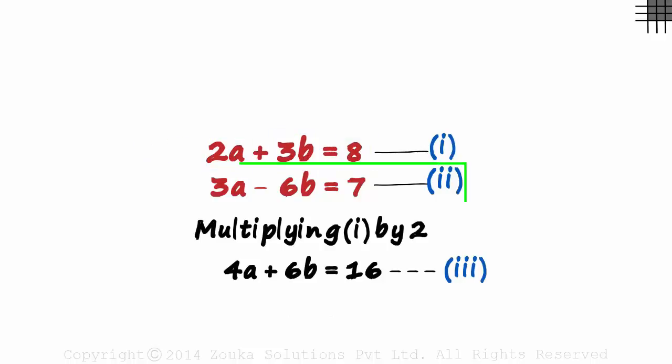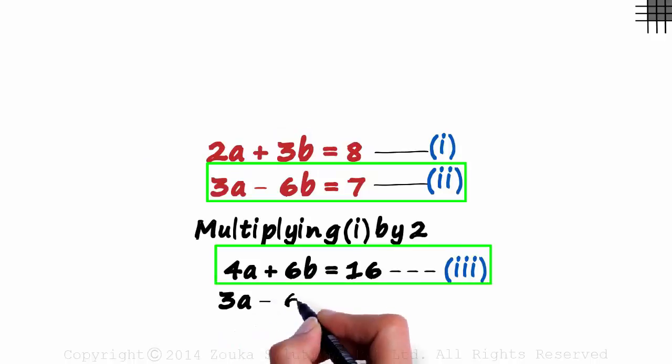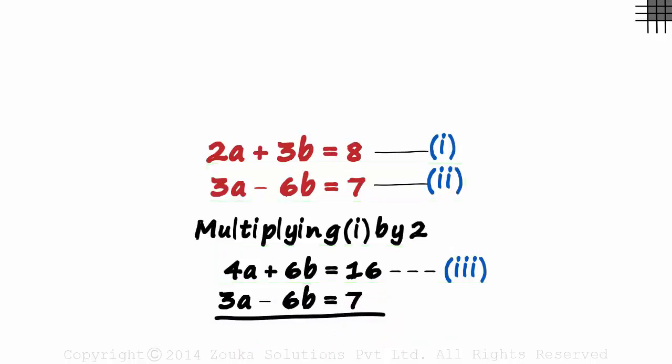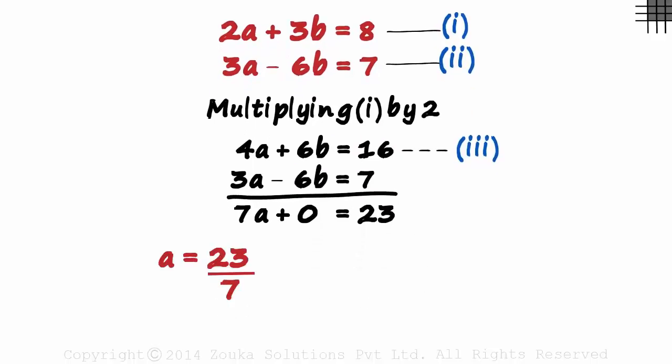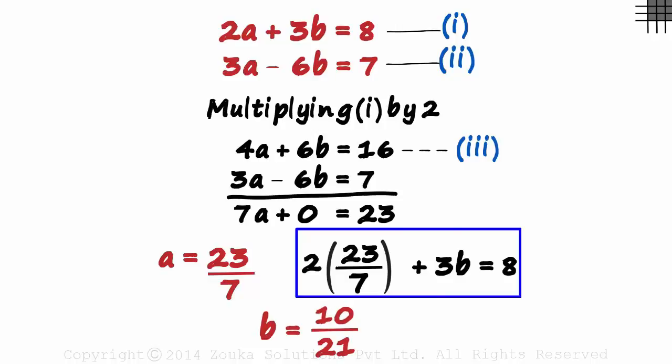To get rid of B, we can write the second equation under the third one and add them. 4A plus 3A is 7A, B cancels out and 16 plus 7 is 23. This gives us the value of A as 23 by 7. To get the value of B, we can substitute this value in any of the equations. If we substitute it in the first equation, it results in this. Solving this gives us the value of B as 10 by 21.